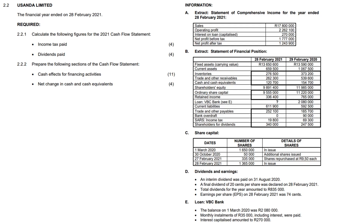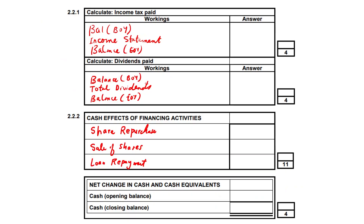Hello everyone. This segment of work focuses on the cash flow statement. Key aspects that we shall be talking about: income tax paid, dividends paid, and then from the cash flow statement, extracts for financing activities, and a rather simple one called net changes in cash and cash equivalents. I've got an answer sheet right here with the information in red already pre-populated, so I save time instead of writing them down as I'm talking my way through it.